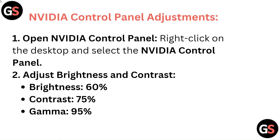For NVIDIA Control Panel adjustments, open the NVIDIA Control Panel by right-clicking on the desktop and selecting it. Then adjust Brightness to 60%, Contrast to 75%, and Gamma to 95%.